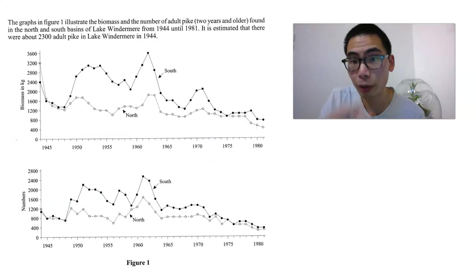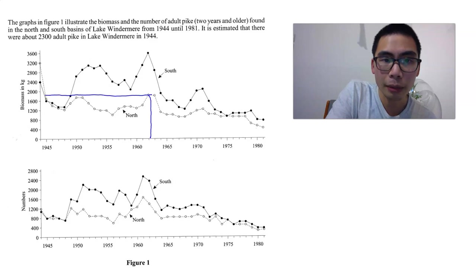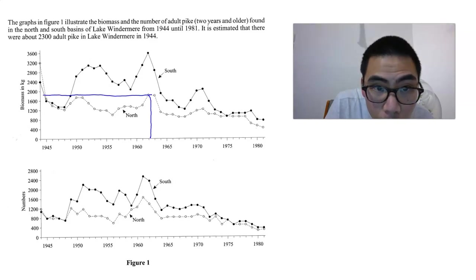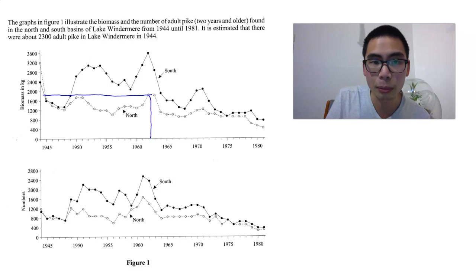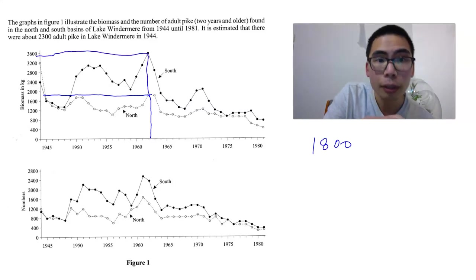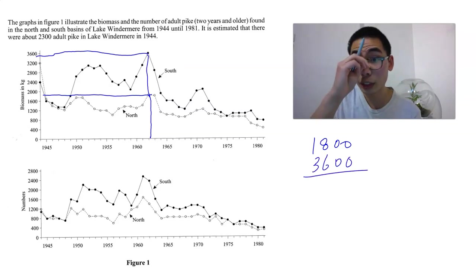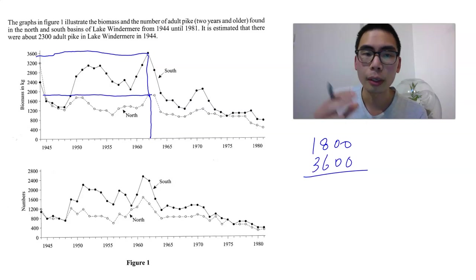Now, we have to look at the biomass of Pike in 1962. In the North Basin, it looks like about... let's say 1,800. And in the South, it looks like it's about 3,600. It's good to actually write things down, by the way. Just a really quick tip.